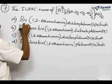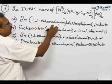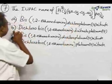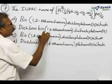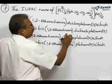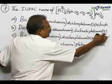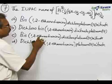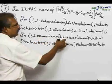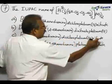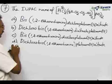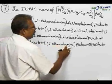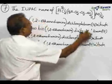Option A, bis within bracket 1,2 ethane diamine, dichloroplatinum 4 nitrate. Then option B, dichlorobis within bracket 1,2 ethane diamine, dinitrate of platinum 4. Option C, bis within bracket 1,2 ethane diamine, then dichloroplatinum 4 nitrate. And option D, dichlorobis within bracket 1,2 ethane diamine, platinum 4 nitrate.